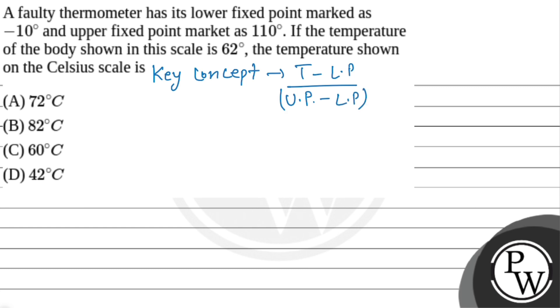This is complete for faulty thermometer equals to value of temperature in degree Celsius. So, let's say x minus value of temperature in degree Celsius minus lower point of Celsius scale upon upper point minus lower point in Celsius scale.